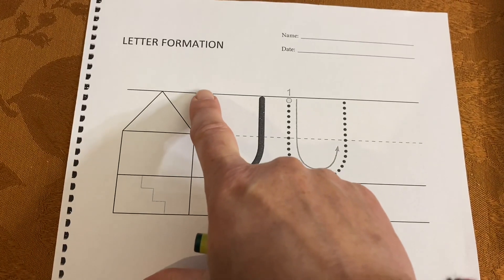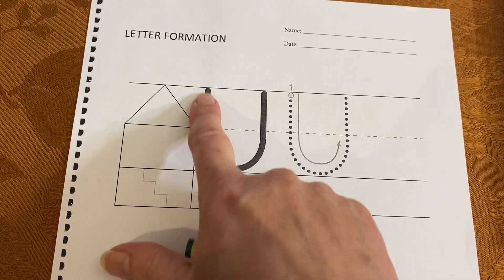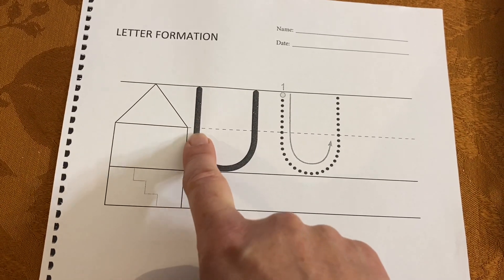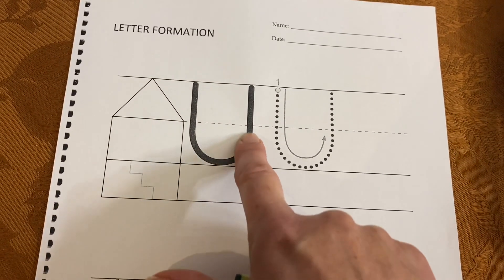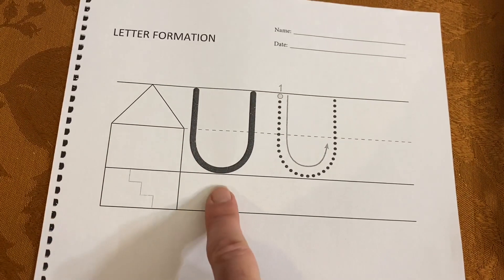You can see that the uppercase U is in the upstairs, the attic, and in the main floor only. It does not go into the basement.